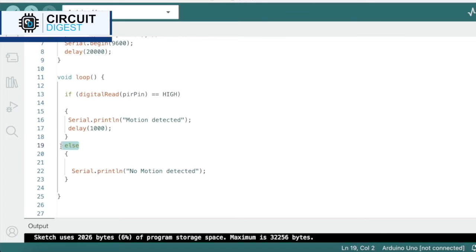Else, if the data coming from the PIR sensor is not high, it will print no motion detected on the serial monitor.